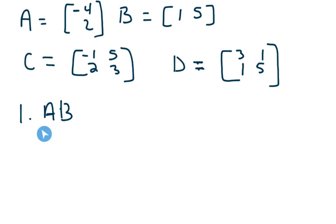Is it going to be defined? So let's take a look at A. I have two rows by one column. And let's take a look at B. I have one row by two columns.